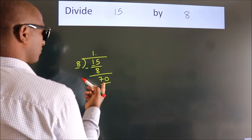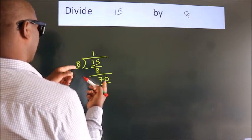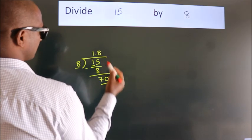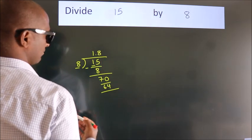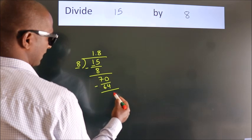A number close to 70 in the 8 table is 8 times 8, 64. Now we subtract. We get 6.